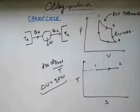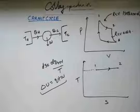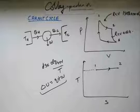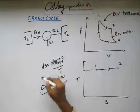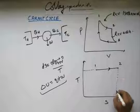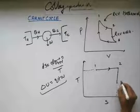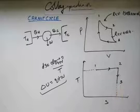Moving from 2 to 3 is an adiabatic reversible process. Since ds equals dq_reversible divided by T, and adiabatic means no heat exchange, dq equals zero, so ds equals zero — change in entropy is zero. Whatever entropy existed at state 2 remains the same at state 3. On the T-S graph, this process is shown as a vertical line.